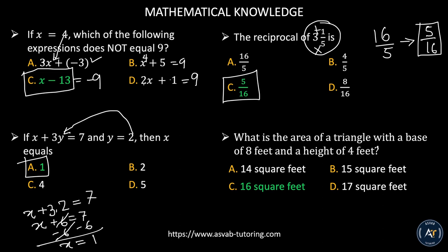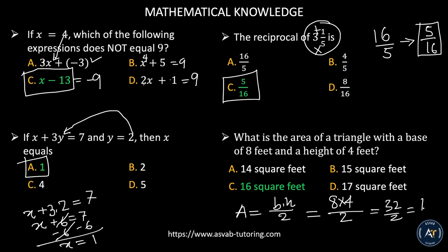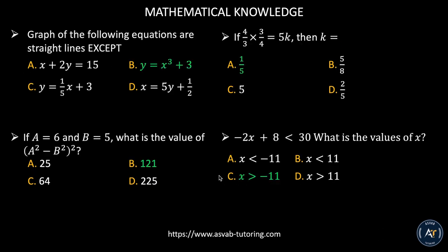What is the area of a triangle with base 8 and height 4 feet? The area of a triangle is base times height divided by 2. That gives you 8 times 4 divided by 2: 32 divided by 2 equals 16. The correct answer is letter C.